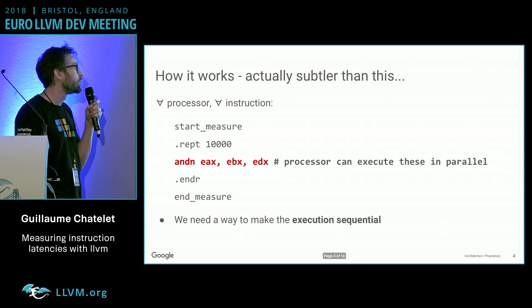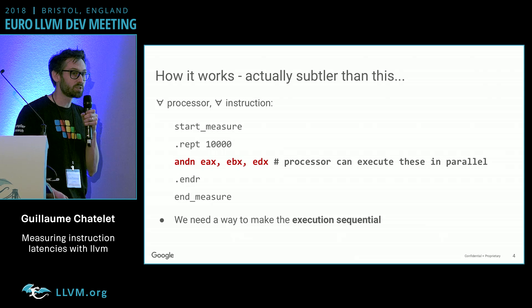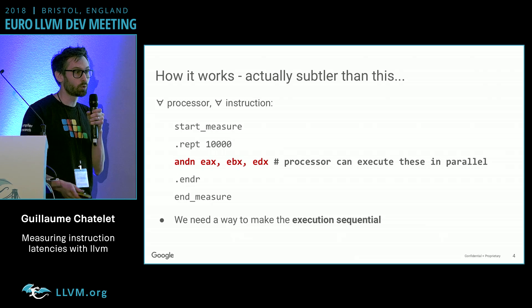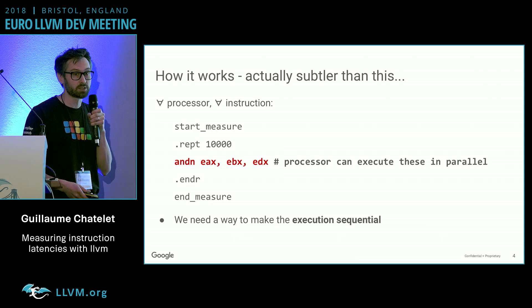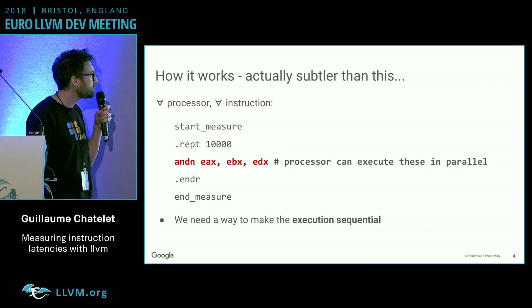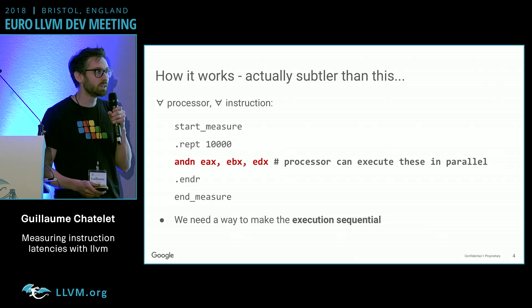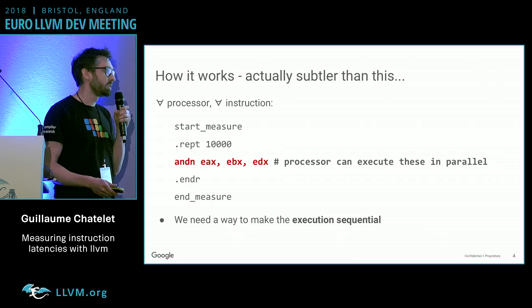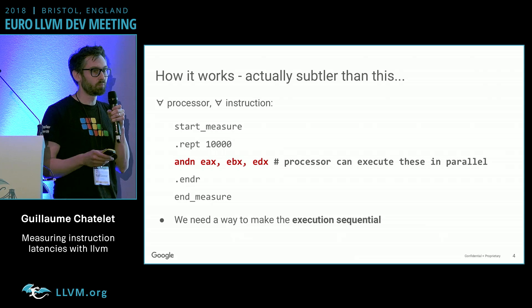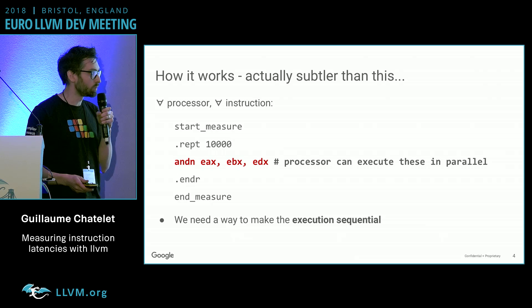In practice, what happens is that the processor is smart. It will try very hard to parallelize the execution of these instructions. So we need a way to make sure that those instructions will be sequential.